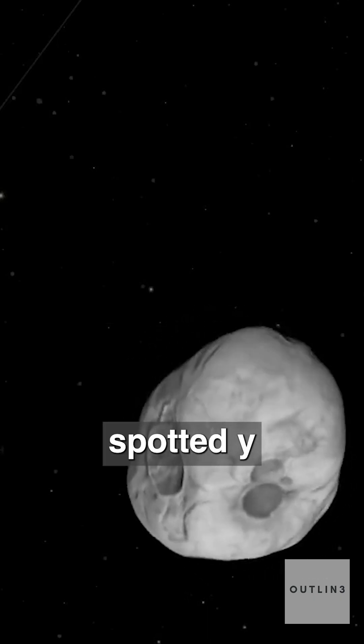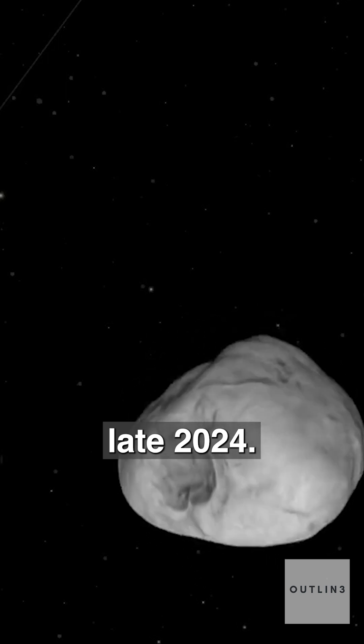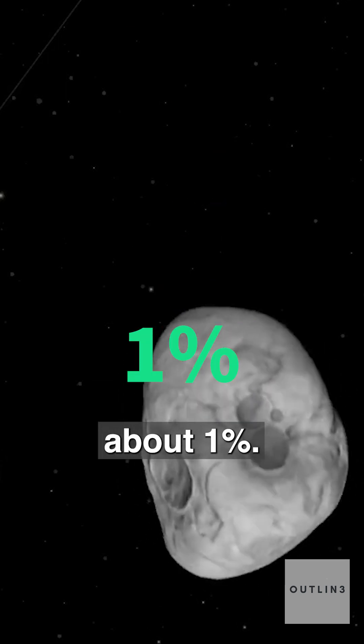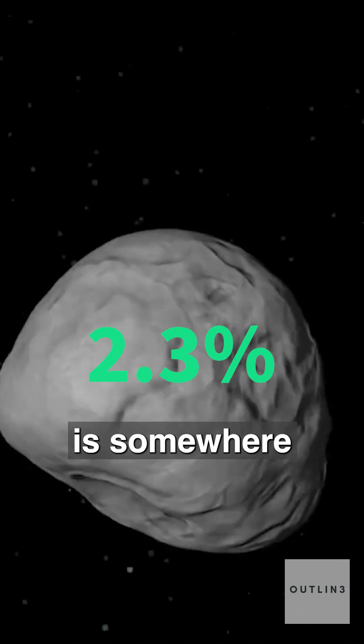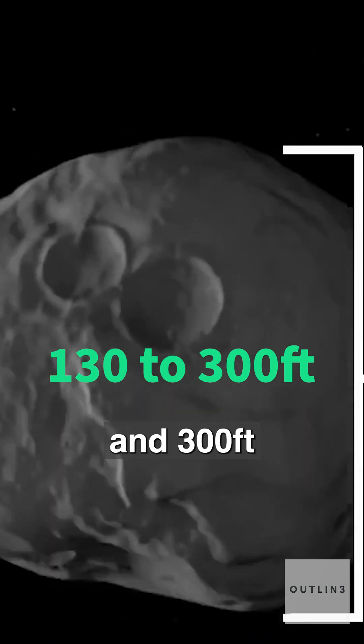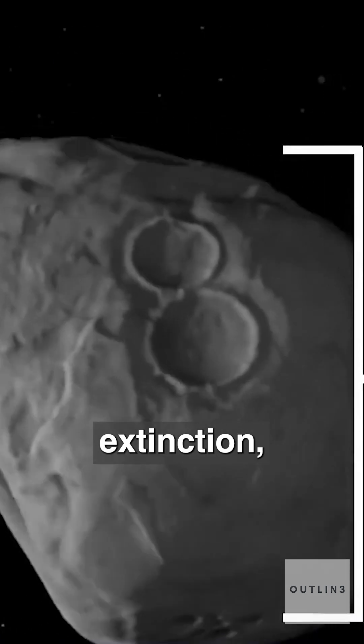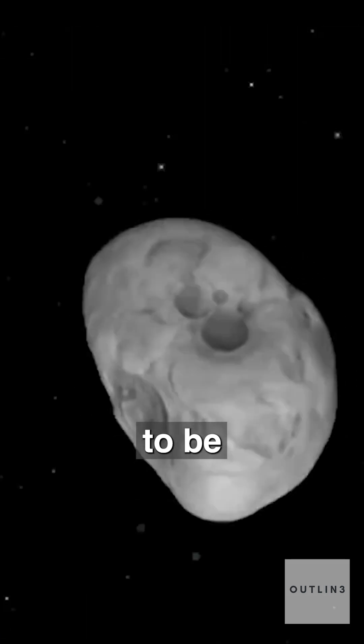Astronomers first spotted YR4 in late 2024. At first, the odds of impact were about 1%. Then suddenly, they jumped to 2.3. The asteroid is somewhere between 130 and 300 feet long. Not big enough to cause mass extinction, but absolutely big enough to be devastating.